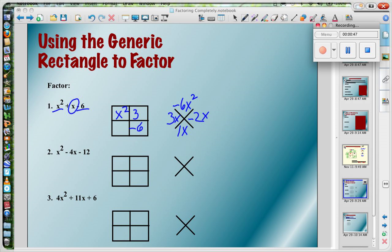Doesn't matter where I put 3x and where I put negative 2, I'll end up with the same answer. So I'm looking at my top row only. As far as the numbers go, there is no greatest common factor. But I do have an x in both cases, so I can factor out an x. x times x is x squared. x times 3 is 3x.